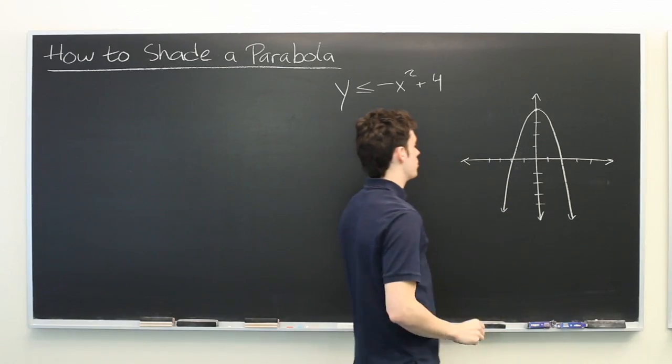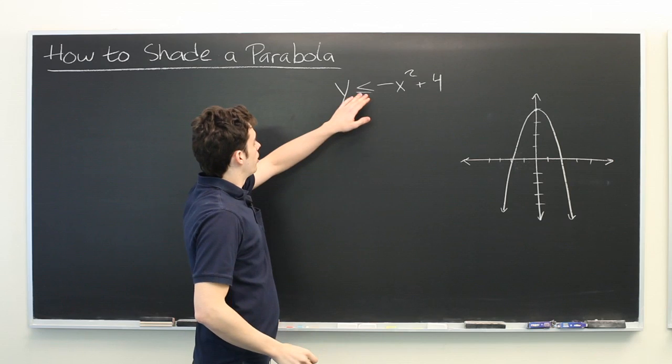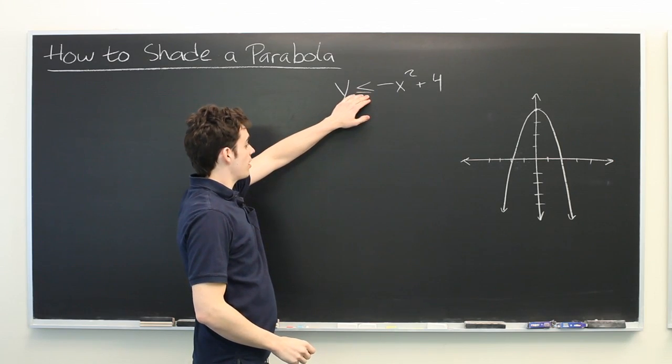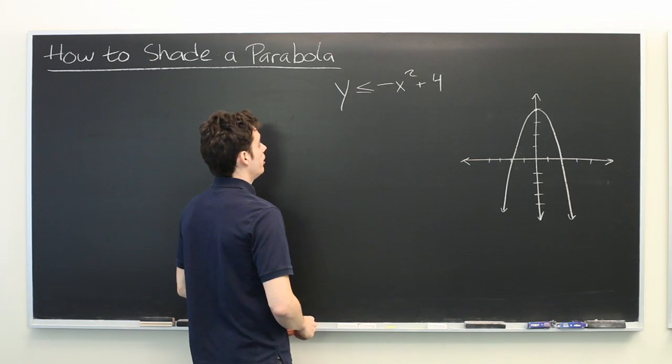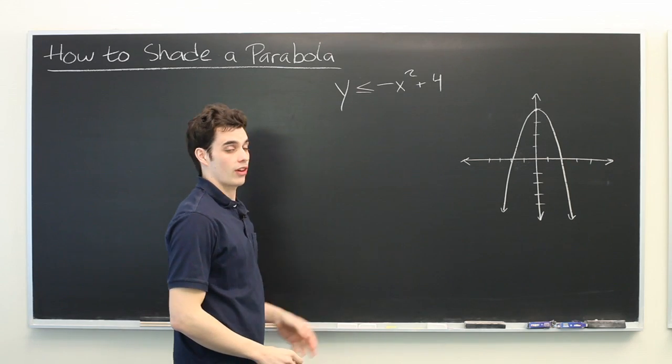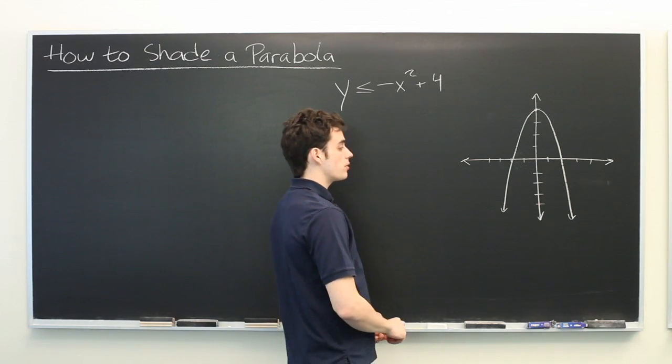A common convention that's used is with equalities and inequalities, we use a solid line. But if it's a strict inequality, such as y is less than negative x plus 4, then we use a dashed line.